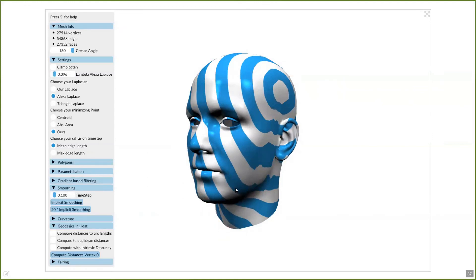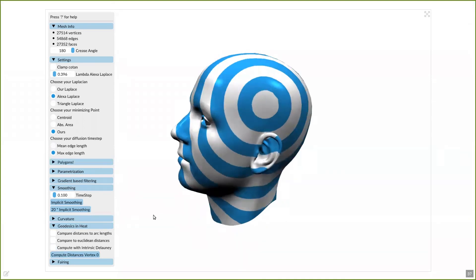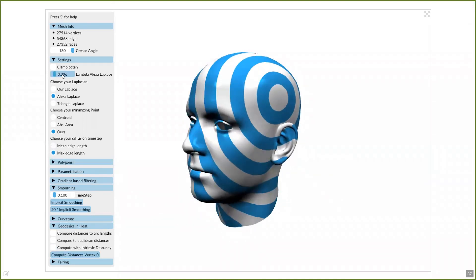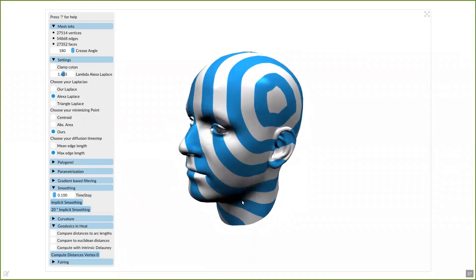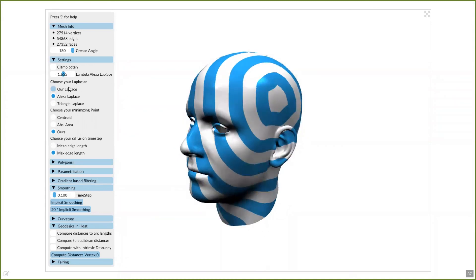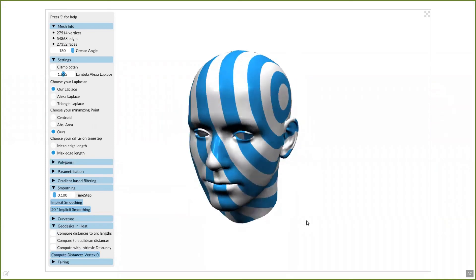Fernando de Goes and Mathieu Desbrun mentioned that choosing a larger time step improves the qualitative performance of Alexa's Laplacian, which I can do. They suggested the maximum edge length of the mesh. And this clearly enhances the performance also for larger lambda values, as you can see here. But this also applies for our operator. So the larger time step also enhances our results, and we obtain very nice isocurves.